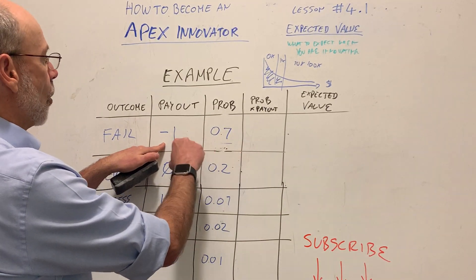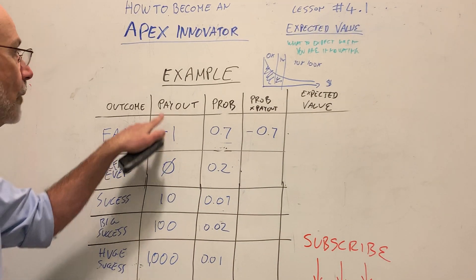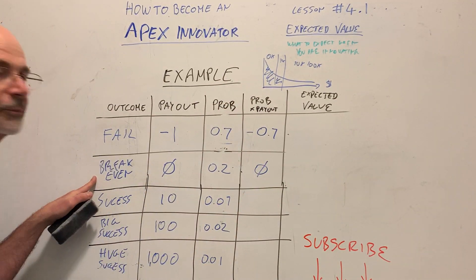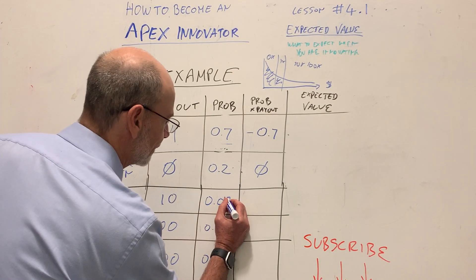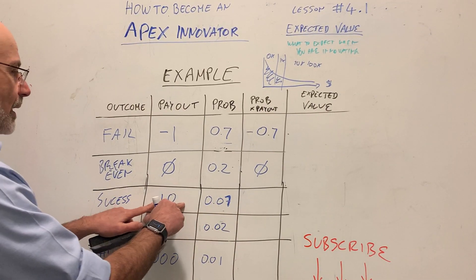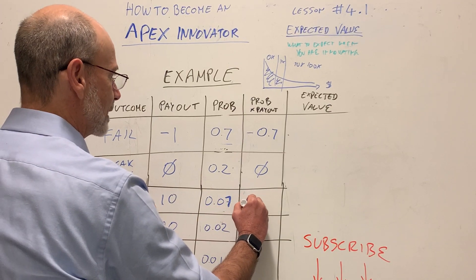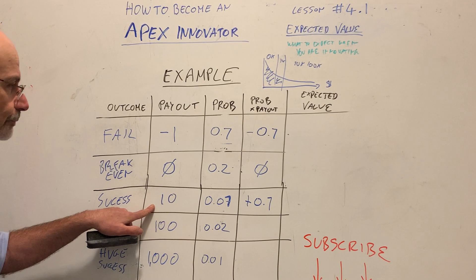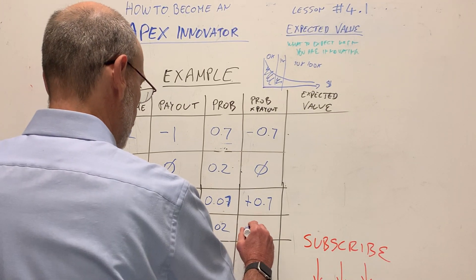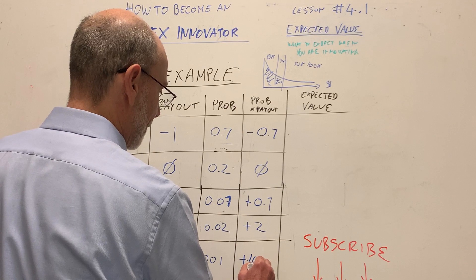Let's do the same calculation as the coin flip. A 0.7 probability of losing one dollar: multiply those and you get minus 0.7. For break even: zero times 0.2 — everything multiplied by zero is zero, so that's nothing. For success: a 10x payout with a 7% chance gives plus 0.7. For big success: a 100x payout with a 2% chance gives plus 2. And for huge success: a 1000x payout with a 1% chance gives plus 10.